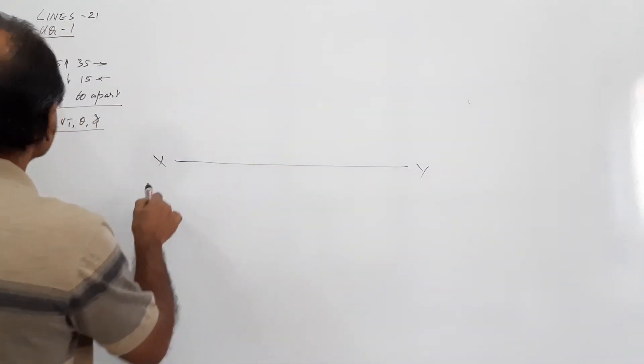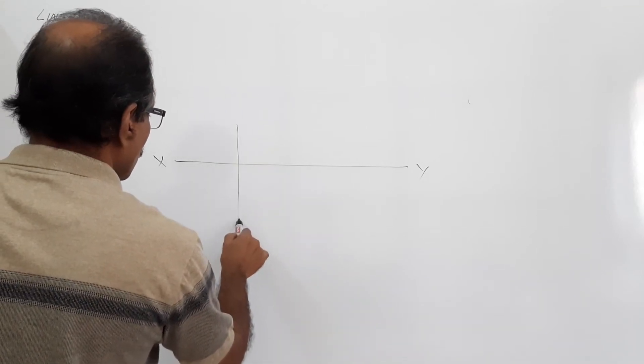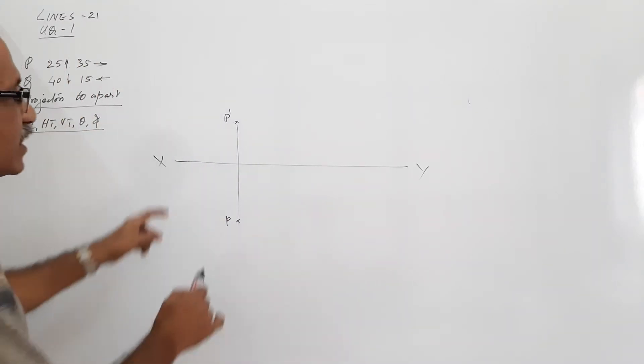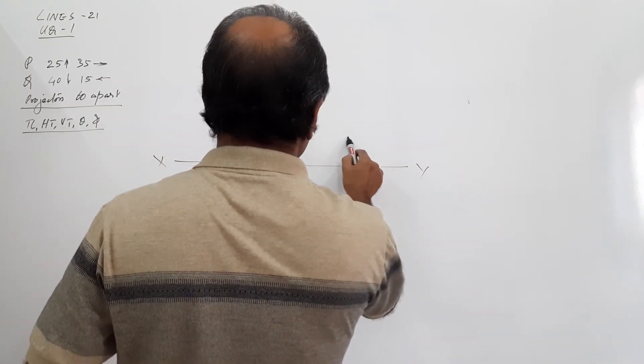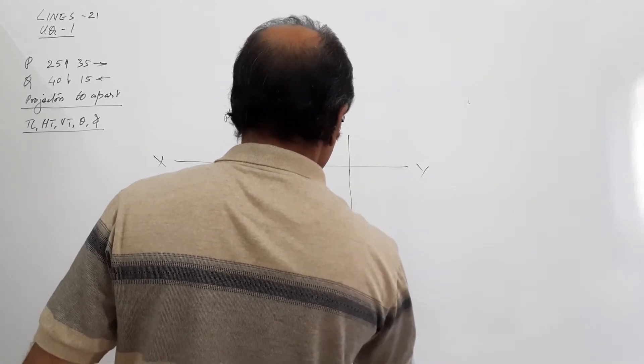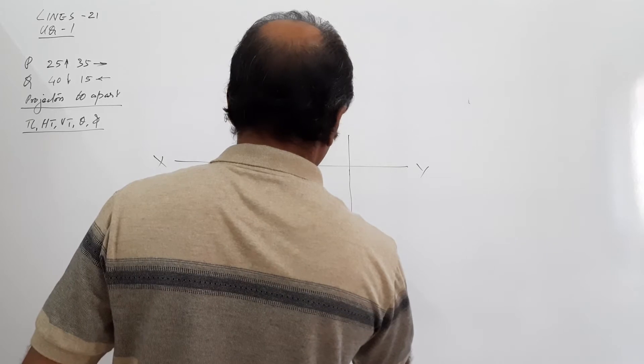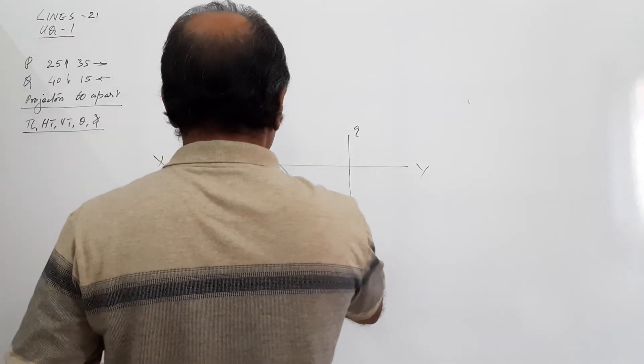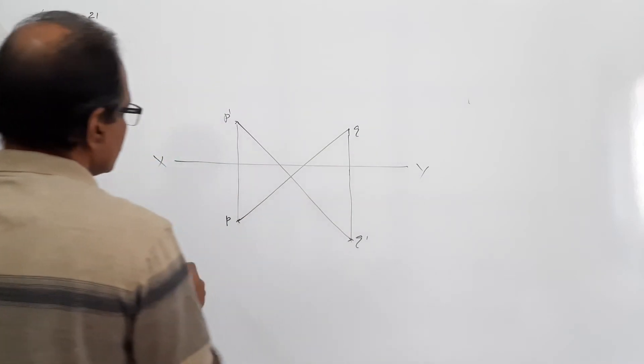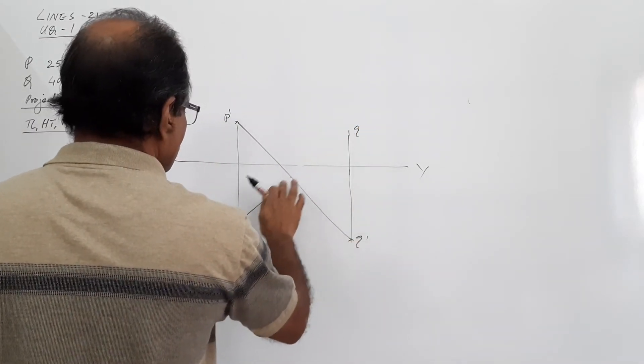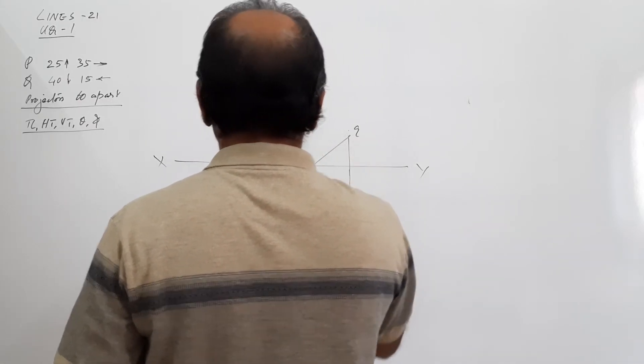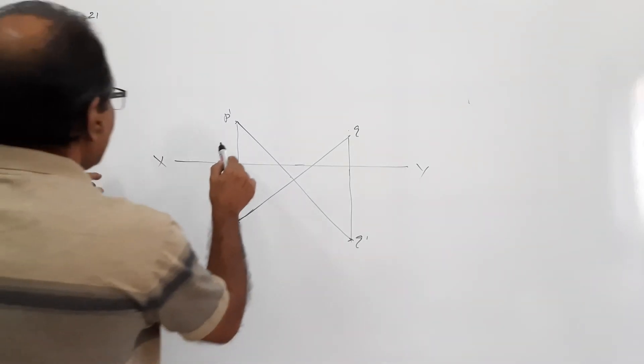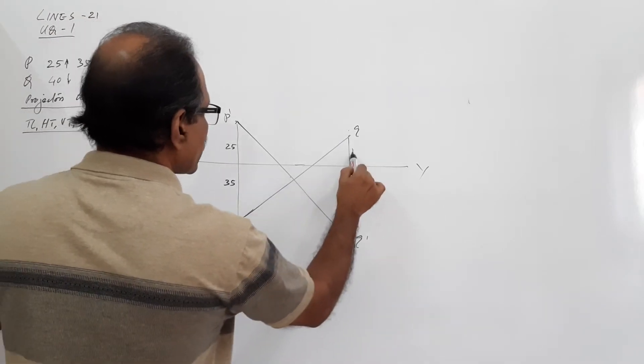Draw an XY line. Locate P dash 35mm below, locate P 60mm away, draw another projector. I am marking the dimensions later, let me mark the plan and elevation first.